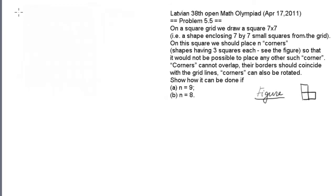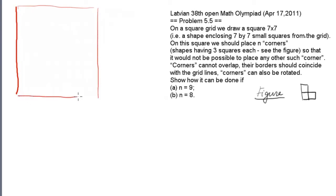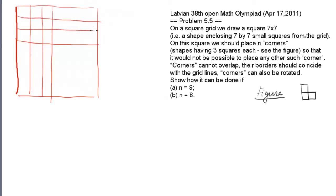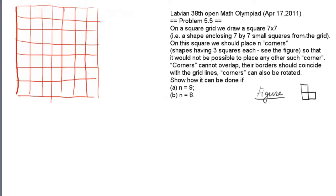In the last problem we start with a square grid and draw a 7 by 7 square. Now let's place the corner shapes: placing the first shape and another shape opposite to that. I'm planning to waste all this space so that no other corners can be placed there.